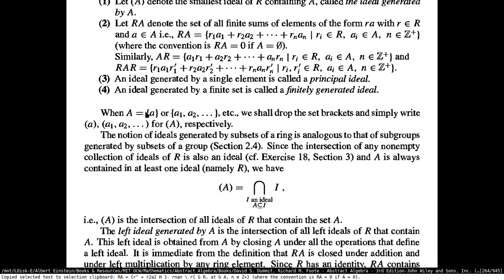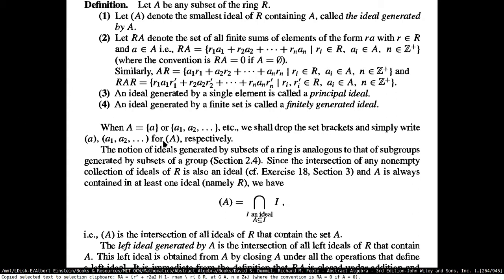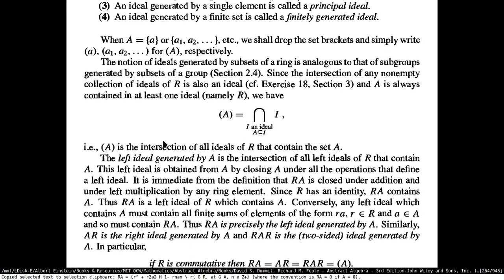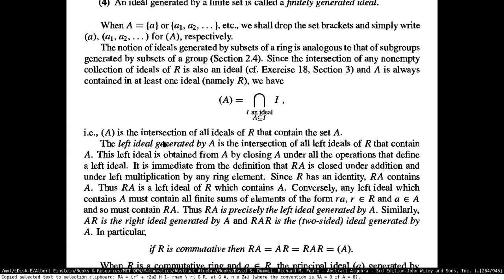The notation is just that if you have the set A containing these elements, then the ideal generated by them would be like this. You can have left and right ideals that are generated by a subset.